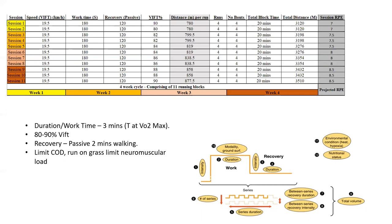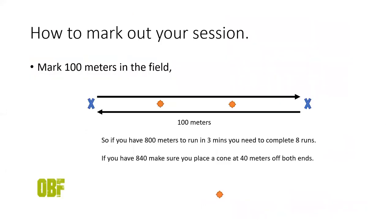Again we're limiting the amount of change of directions, we're running on grass so we're limiting that neuromuscular load, and your recovery is just passively walking. You have session one to session 11. Your first week you have two sessions, and then from week two, three, and four you do three sessions within the week.